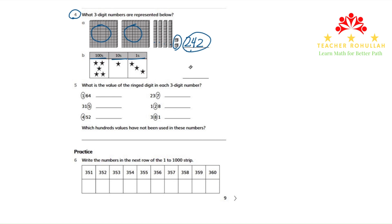So the number in the hundreds place is five. In the tens place, we have one star, so the number in the tens place is one. We have three stars in the ones place, so the number in the ones place is three. The number represented by the stars in part B of question four is five hundred thirteen, 513.